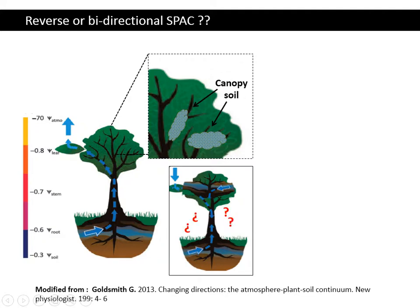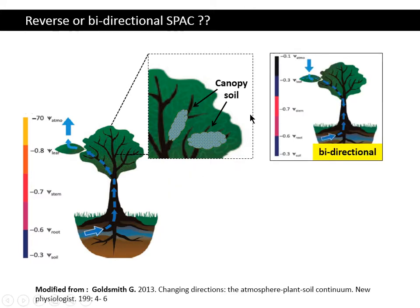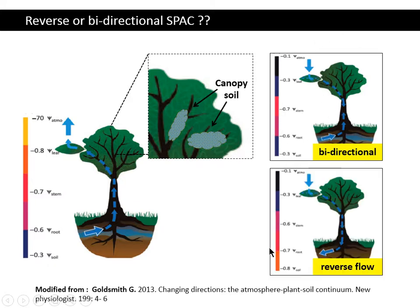We know, and we just saw in different presentations, that there have been studies showing there is also bidirectional flow. This will change according to the conditions — it will change the pressure gradient. The water movement can be bidirectional, so in both ways, or it can be just reverse flow. It depends on the conditions.